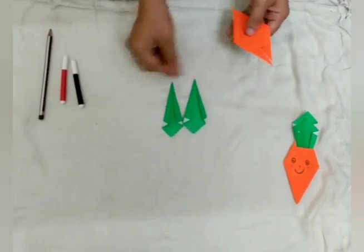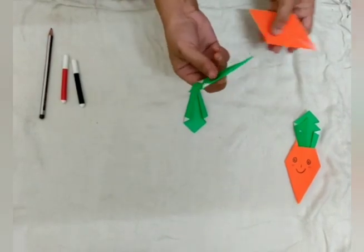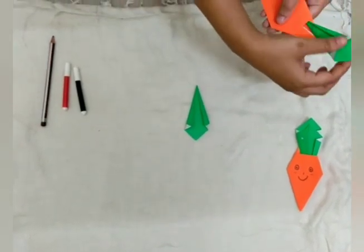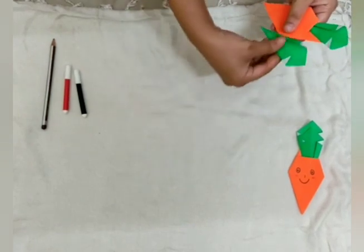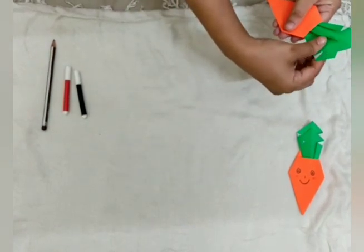So, see? Our carrot and leaves are ready. Now we have to put them together. Now this leaf will go here, and this leaf will go here.